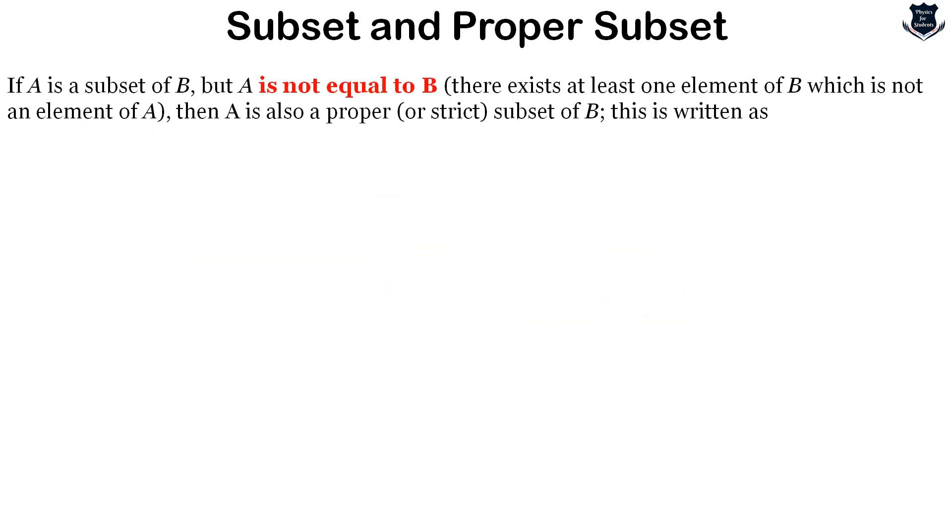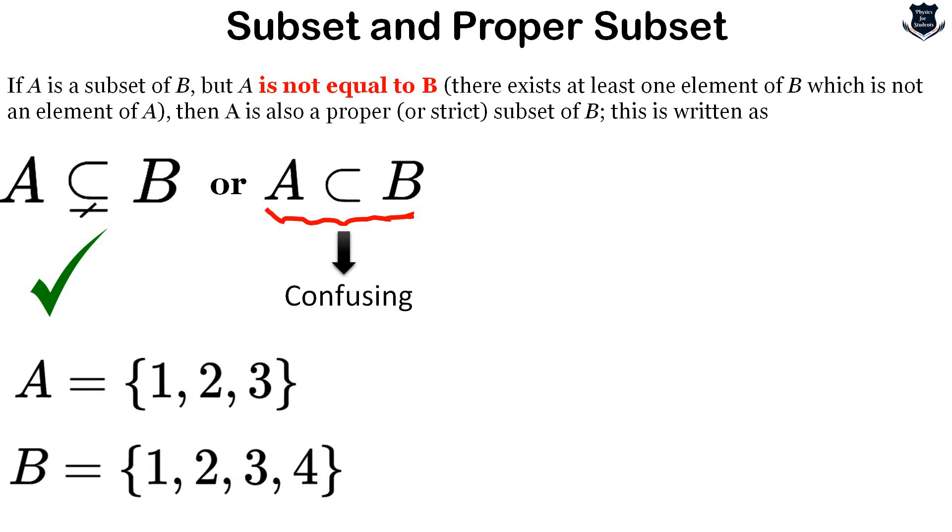If A is a subset of B but A is not equal to B, then we call A a proper subset or strict subset of B. We can write it as A ⊂ B or another notation. However, in my previous video in the playlist, I discussed why this notation can be confusing. I recommend using the notation with the underline.